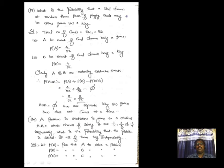Next important problem: A problem in statistics is given to three students A, B, C whose chances of solving it are 1/2, 3/4, and 1/4 respectively. Find the probability that the problem is solved if all three try independently. Let P(A) = 1/2, P(B) = 3/4, P(C) = 1/4. We need to find P(A ∪ B ∪ C).